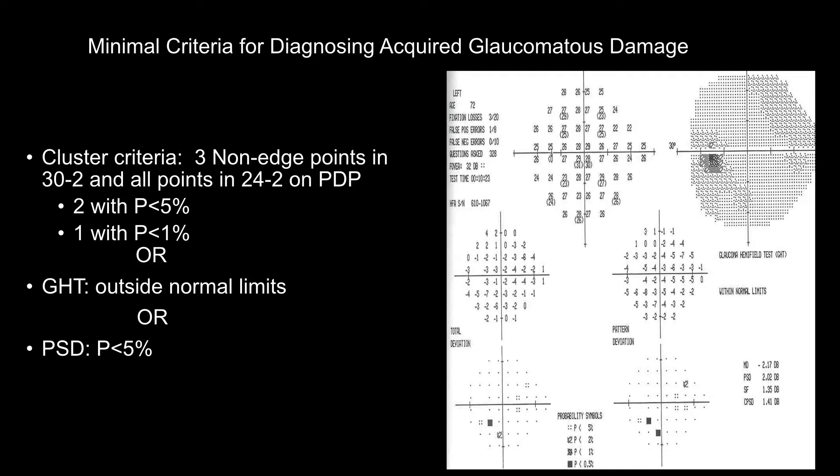The minimal criteria for labeling a visual field as abnormal is meeting one of these listed criteria. The cluster criteria means having three abnormal points in the pattern deviation plot, two of them with a p-value less than five percent, and one of them with a p-value less than one percent. The second criteria is having an outside normal limits glaucoma hemifield test.